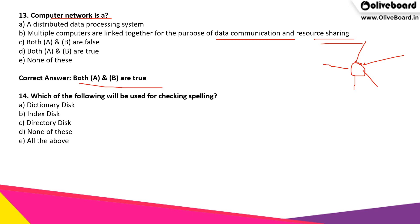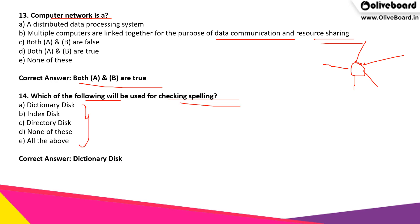Which of the following will be used for checking spelling? If we have any spelling errors, which of the following helps in checking that? The correct answer is option 1, which is dictionary disk.